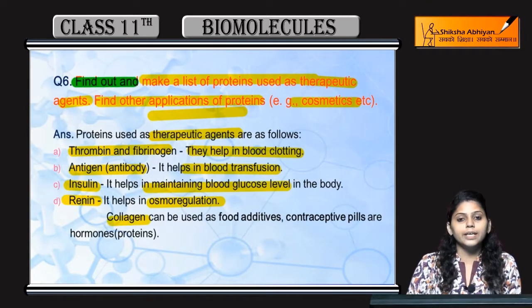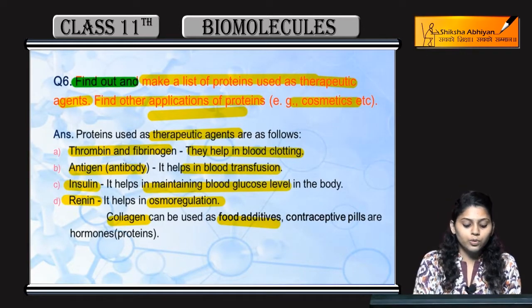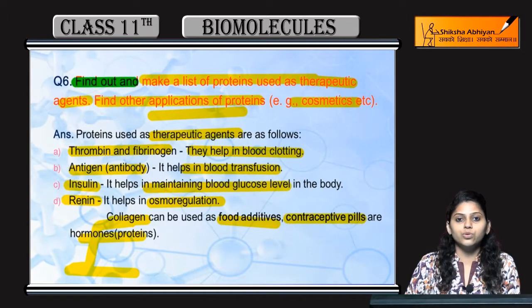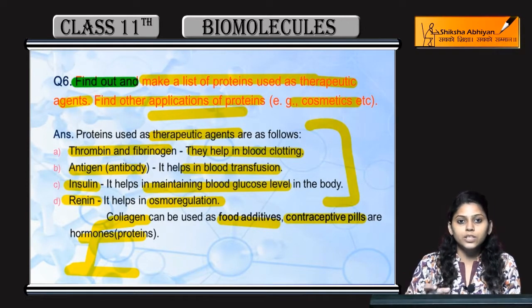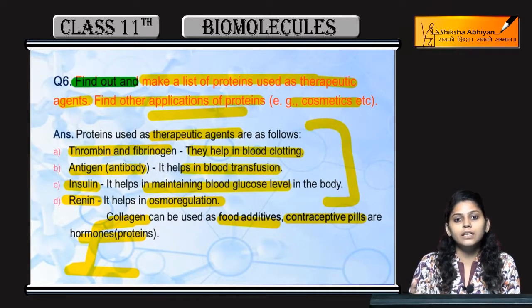Coming to applications other than these therapeutic agents: collagen is used as a food additive, and some hormones that are proteinaceous in nature are used in contraceptive pills. So this covers how different proteins are used as therapeutic agents, as food additives, and for making contraceptive pills.